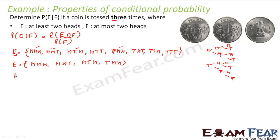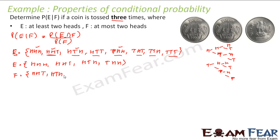F is 'at most two heads', that is zero, one, or two heads. HHH has three heads so it does not qualify. Everything else qualifies. So F will be HHT, HTH, HTT, THH, THT, TTH, and TTT.